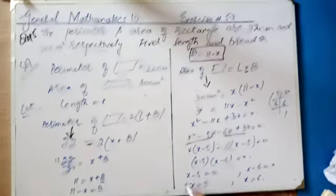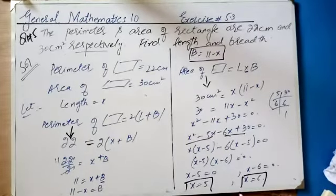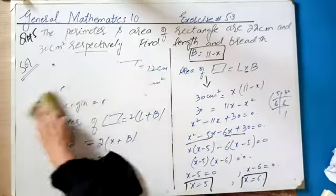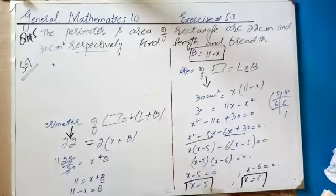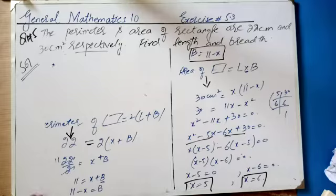From here we got x, and x represents length as we defined at the start. So length has come out. We have two answers: x = 5 and x = 6, and both represent length values.